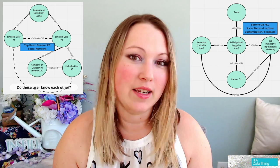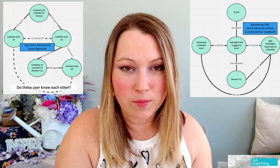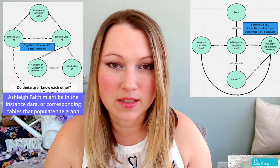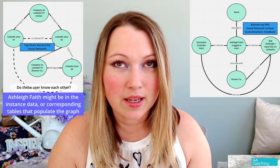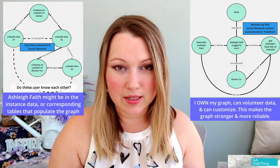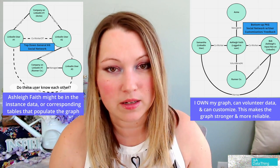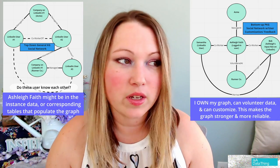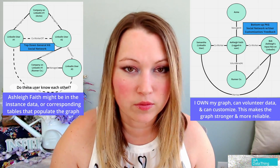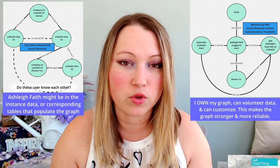So in this case, it would be Ashley Faith employed at name of company. That data still does exist on a more general knowledge graph use case. But in my case, I may be creating a personal knowledge graph of my employment history, where I can actually create all of the connections to the companies that I've worked for, or that I have volunteered at, or whatever it is that I want to showcase in my knowledge graph.